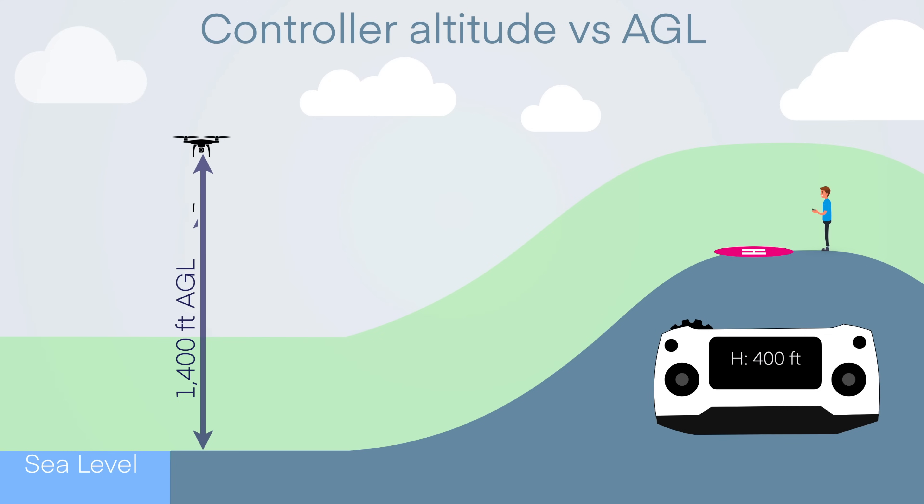Now what if you maintain that altitude and fly forward down into the valley? Your controller still says 400 feet — that's height above the takeoff point. But you're now 1,400 feet above the ground, which is not what the FAA allows. The FAA cares about height above the ground, and in most cases you can only fly 400 feet AGL. It's not simple to know your exact AGL because the terrain keeps changing. You need to research the terrain around you before you fly and estimate what 400 feet above the ground looks like.